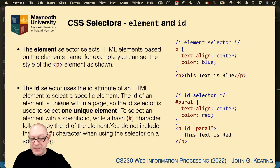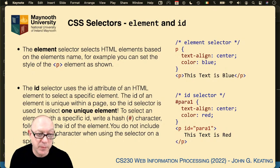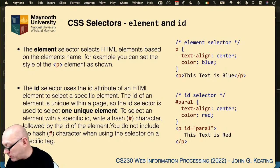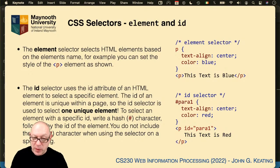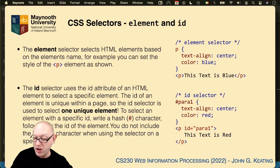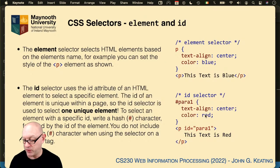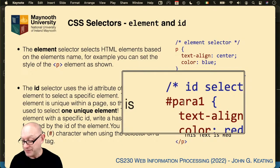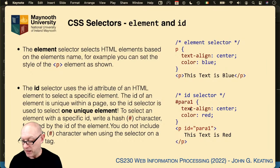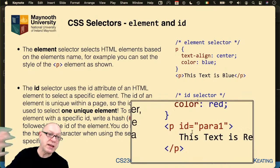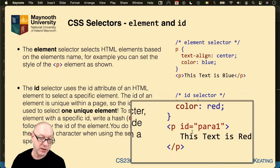The ID selector uses the id attribute to select a specific, unique element. The id of an element should be unique within a page. To select an element with a specified ID, use the hash character followed by the ID. For example, #para1 with text-align center and red color means any element with that ID will have red centered text, which can override previous paragraph element selections.